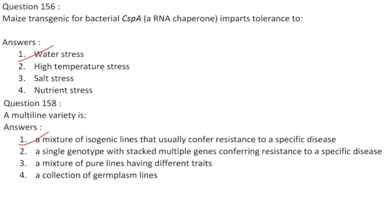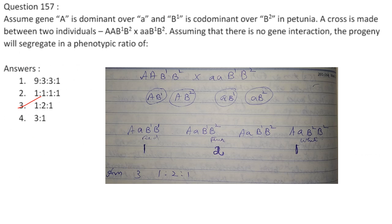Maize transgenic for bacterial CspA, an RNA chaperone, imparts tolerance to water stress. A multi-line variety is a mixture of isogenic lines that usually confer resistance to a specific disease. Answer is option 1. Assuming gene A is dominant over a and B1 is co-dominant over B2 in petunia — a cross between AA B1B2 and aa B1B2: gametes are mixed and upon crossing you get red, pink, and white in a 1:2:1 ratio. Answer is option 3.